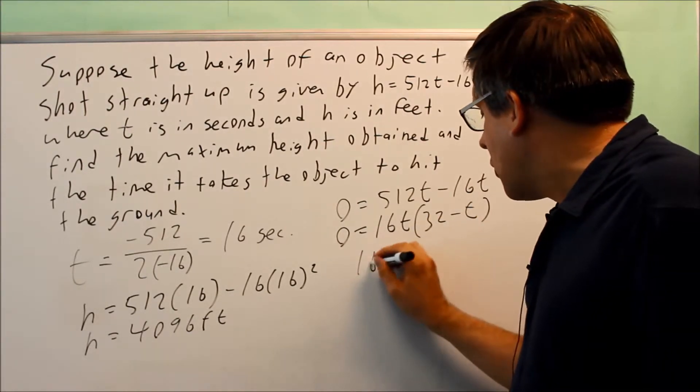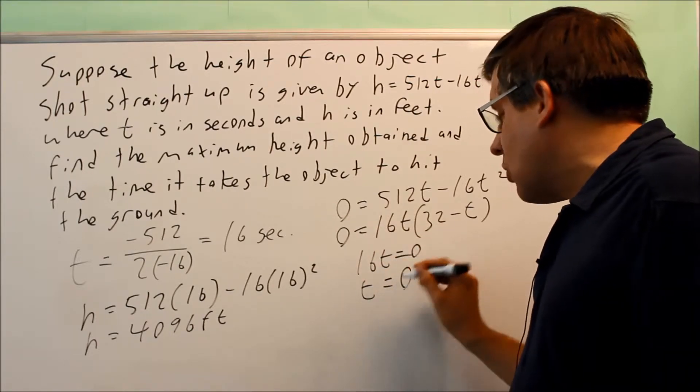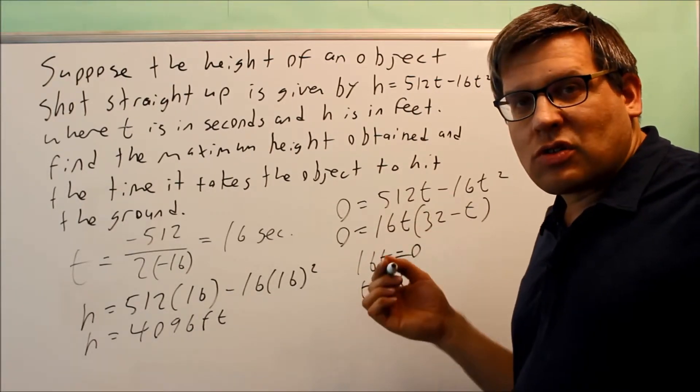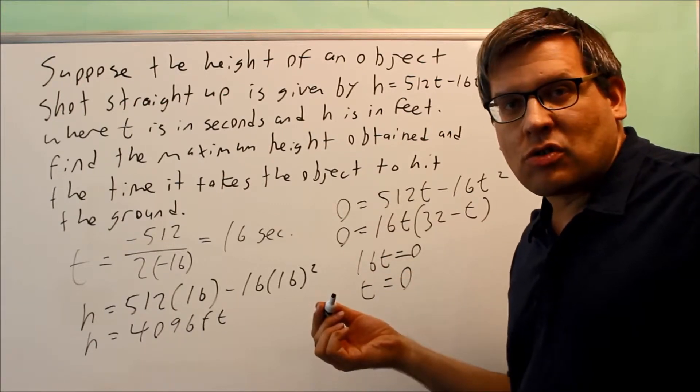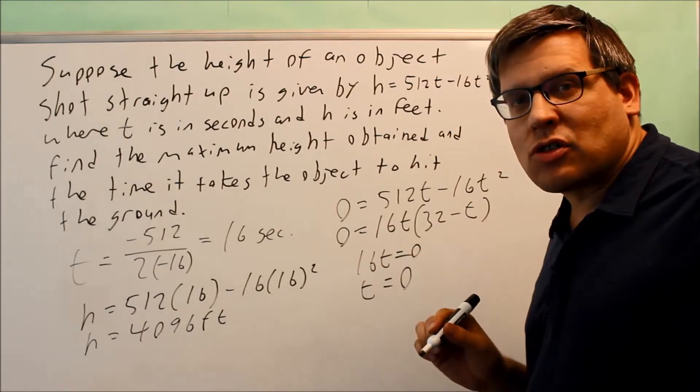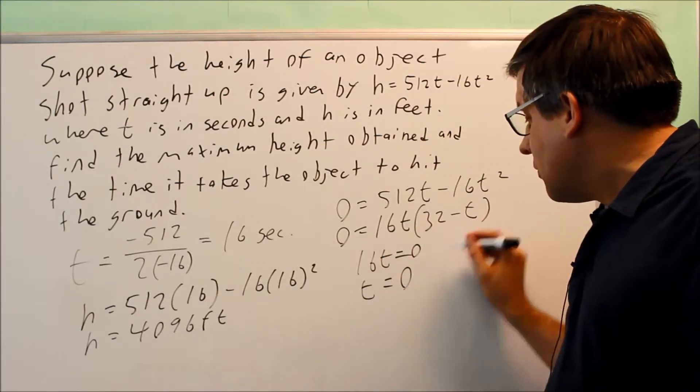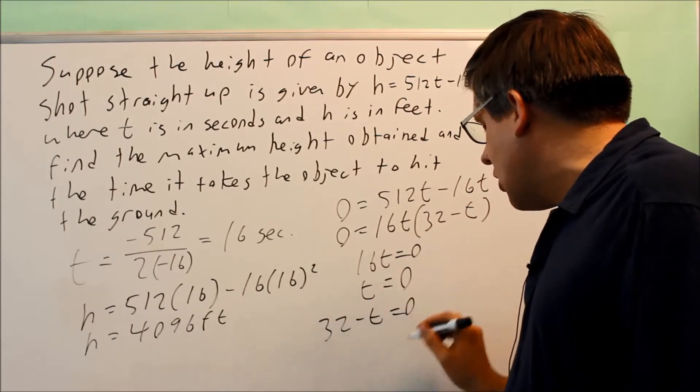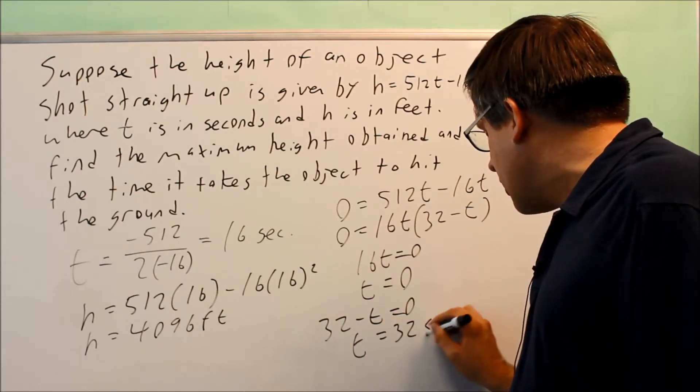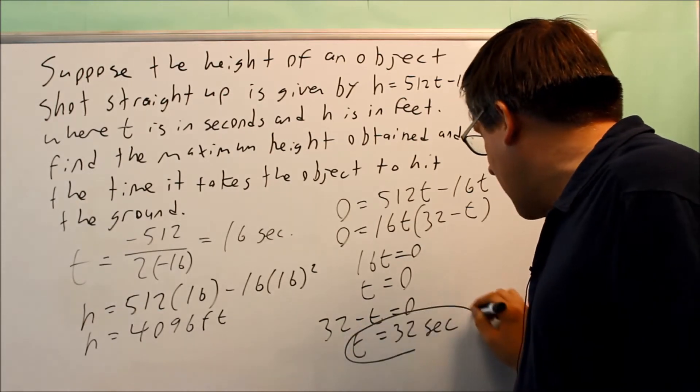Now if you set both those equal to 0, you're going to get t equals 0, which we know means it starts on the ground at t equals 0 seconds. I'm not concerned about that. I'm concerned about when it lands later. So then I have 32 minus t equals 0, and I'll get 32 seconds for my answer there.